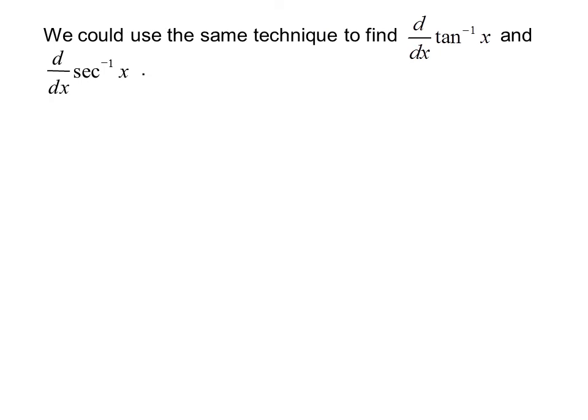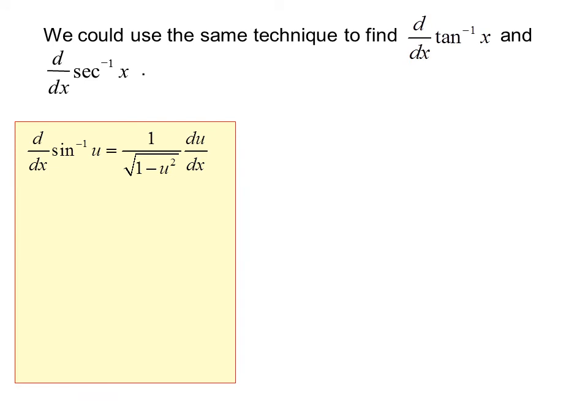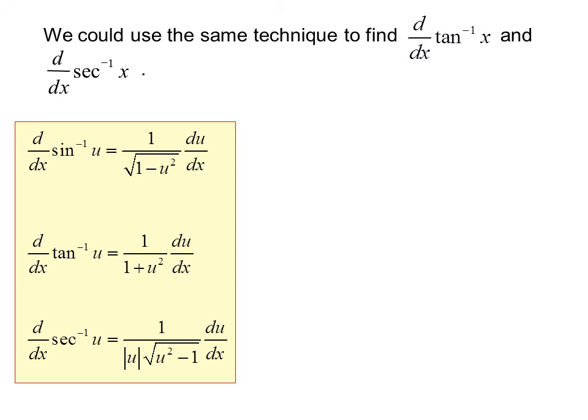We could use the same technique to find the derivative of inverse tangent x and inverse secant x. So we have: the derivative with respect to x of inverse sin u is 1 over radical(1 minus u²) · du/dx; and the derivative with respect to x of inverse secant u is 1 over |u| · radical(u² minus 1) · du/dx. Notice we have the chain rule built into all of these formulas.